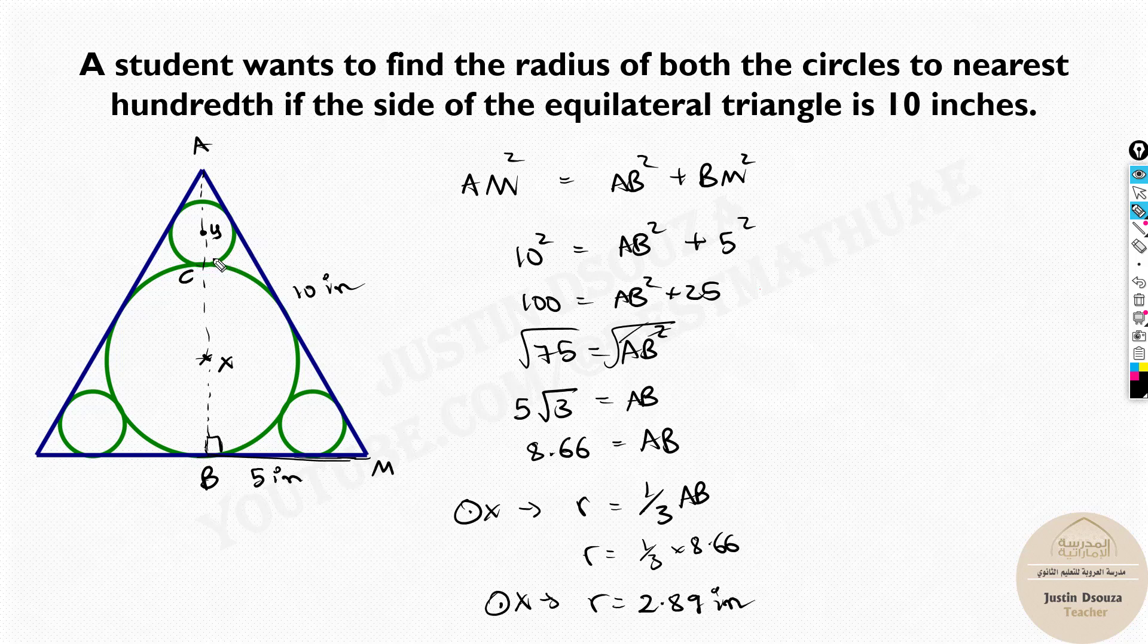Now for this equilateral triangle we took 1/3 of the height. What if I cut this out? Then this becomes another equilateral triangle with the smaller circle in it. So if I find this height AC, 1/3 of AC would be the radius of the smaller circle.